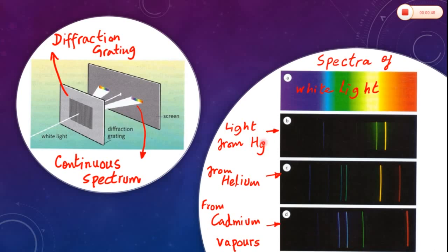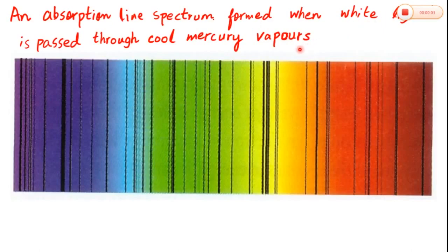Here are three examples of emission line spectra: one from mercury, one from helium, and one from cadmium vapors. For the absorption line spectrum — when white light is passed through cool gases like cool mercury vapors and then through a diffraction grating, an absorption line spectrum is formed. Certain wavelengths are absorbed, and hence black lines appear in the continuous white light spectrum.